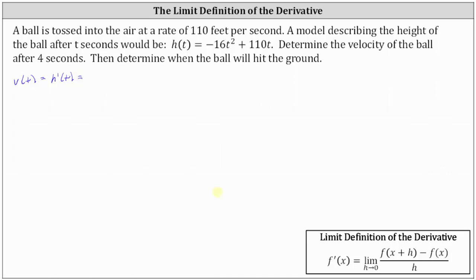Therefore, h prime of t is equal to the limit of the difference quotient, which in our case is going to be h of the quantity t plus h minus h of t, all divided by h as h approaches zero.